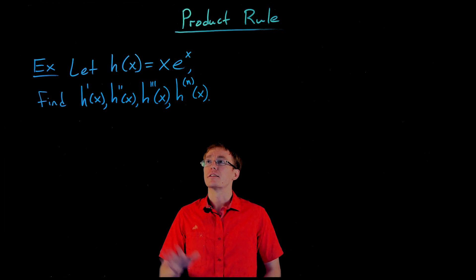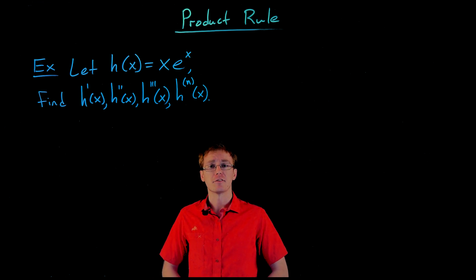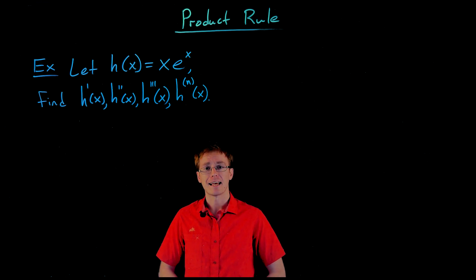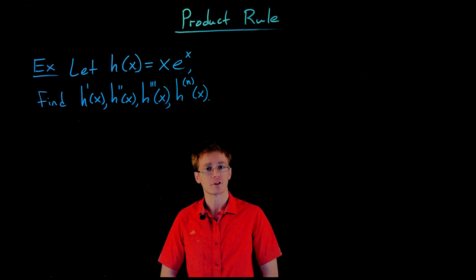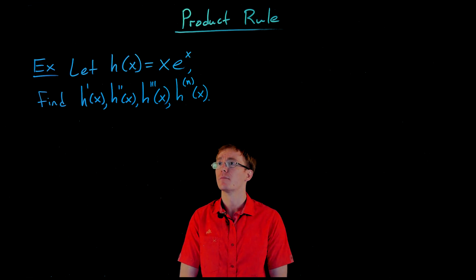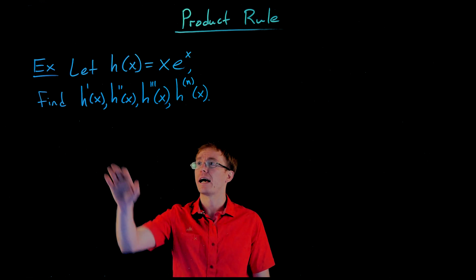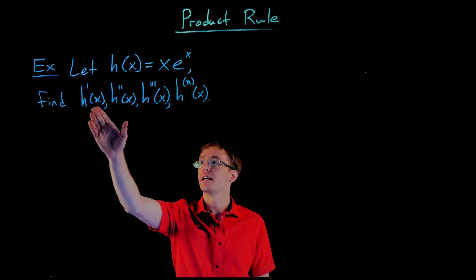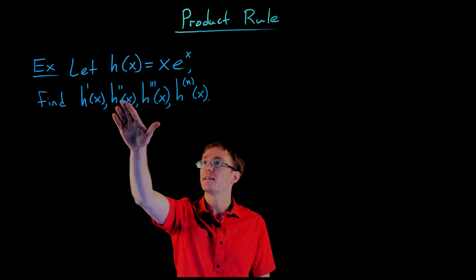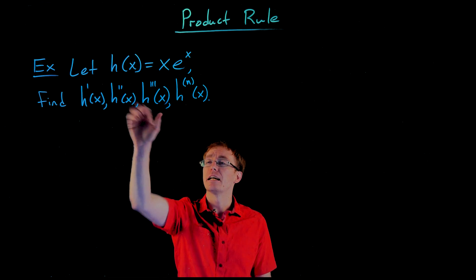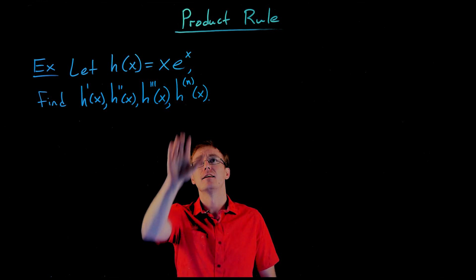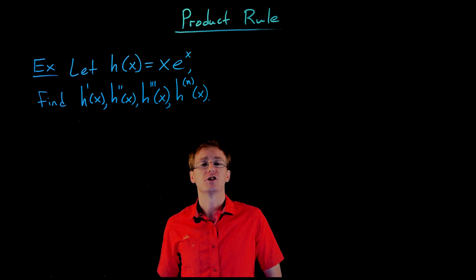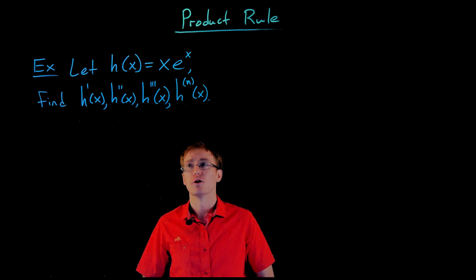In this video we're going to look at this example where we're given the function h of x defined as x times the natural exponential function e to the x. Here we are asked to find h prime of x, h double prime of x, h triple prime of x, and h to the n of x.